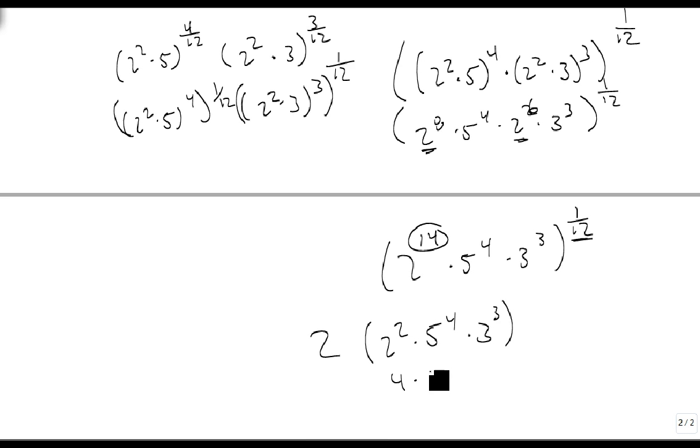This is 4 times 625 times 27. I really don't like that number very much. So I'm going to get out a calculator. And that's going to give me 4 times 625 is 2500 times that by 27 is 67500. So we get 2 times the 12th root of 67,500.